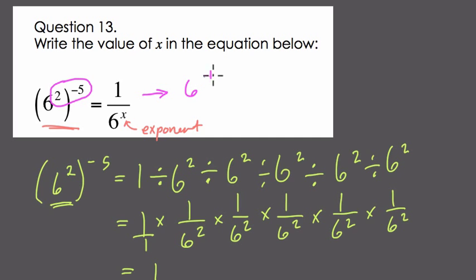So what is x? Well, 6 to the negative 10, by definition, is 1 over 6 to the 10th. It's 1 divided by 6 10 times. So it equals 1 over 6 to the 10th as well. That's another way of thinking about it.